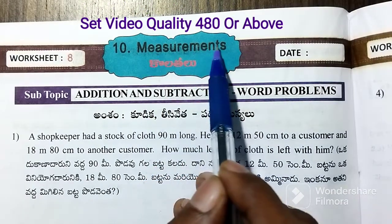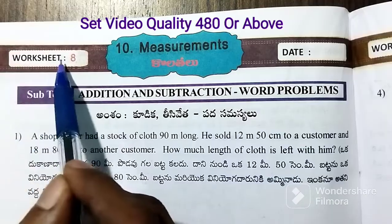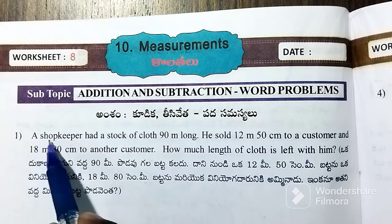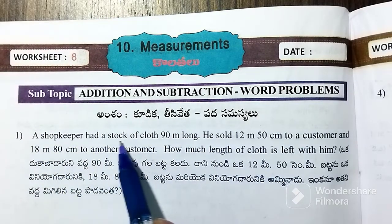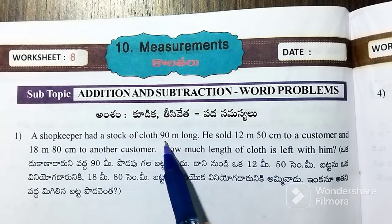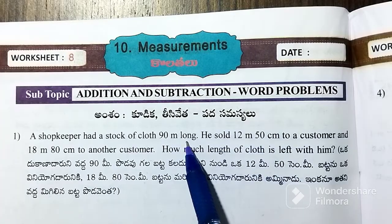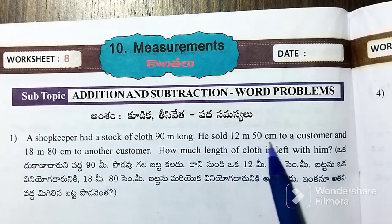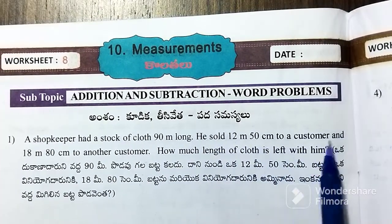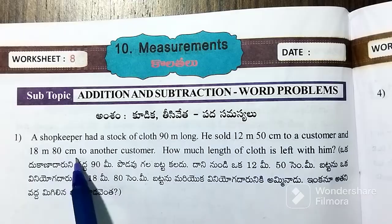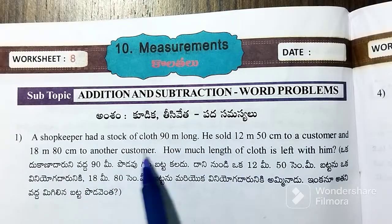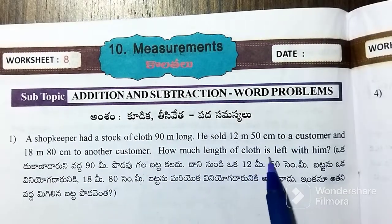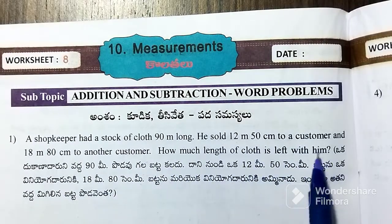This is the measurement chapter of the worksheet. A shopkeeper had a stock of cloth 90 meters long. He sold 12 meters 50 centimeters to a customer and 80 meters 80 centimeters to another customer. How much length of cloth is left with him?